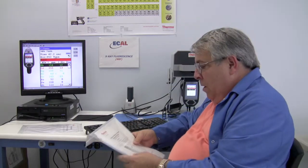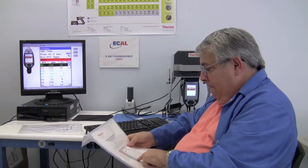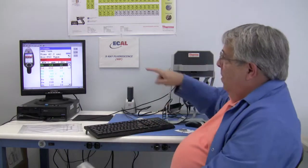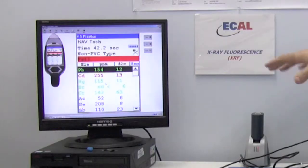So if we look here, the standard that comes with this says lead is 155 parts per million, plus or minus 12. We measured 154. That's pretty good, right?